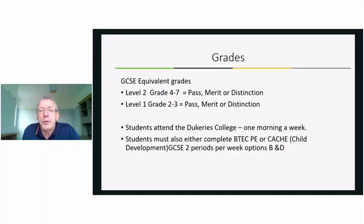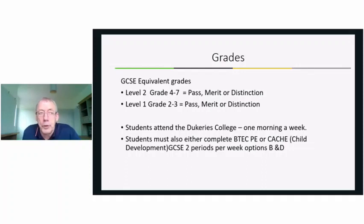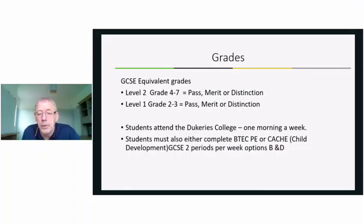Not only are you going to leave with the equivalent of a GCSE grade, you're going to leave with the same qualification that an adult would in the same industry. You'll be attending Duke East College one morning a week. You will also be expected to pick up BTEC PE, GCSE Cash, or Child Development for two periods per week in options bands B and D. You need to consider whether you can commit to a full morning a week at Duke East College as well as two years of working through your BTEC PE and your Cash or Child Development.